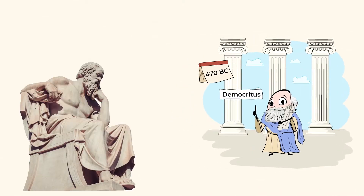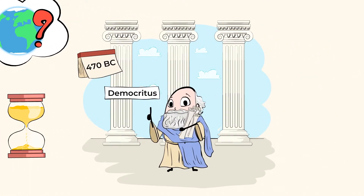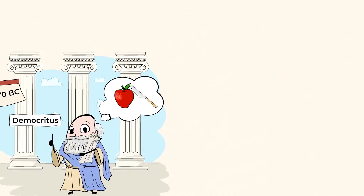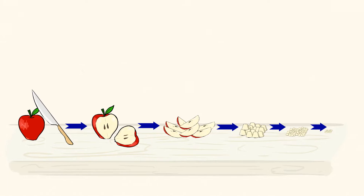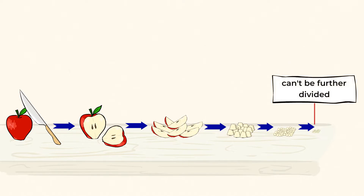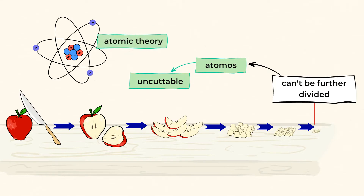Back then, philosophers like him spent a lot of their time wondering and thinking about the world around them. Democritus wondered what would happen if he cut an apple into smaller and smaller pieces over and over again forever. He came to the realization that eventually the pieces would be so tiny that he wouldn't be able to divide it up any further. And he called these uncuttable pieces atomos, which means uncuttable in Greek.